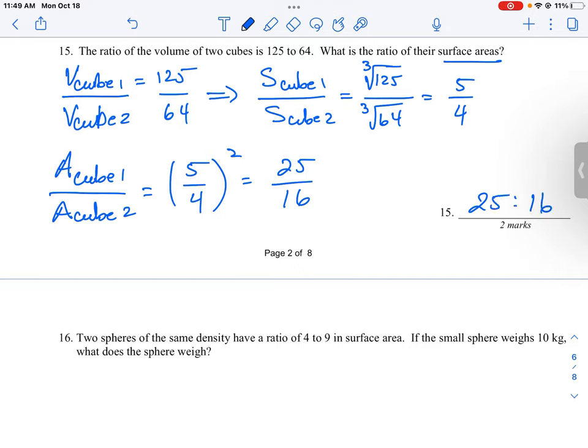Okay, so you see how the pattern works, where you have to go from volume down to side of the object, which you have to undo the volume, and then to go from the side to area, you have to end up squaring it. Okay, so that's how you go through that question.